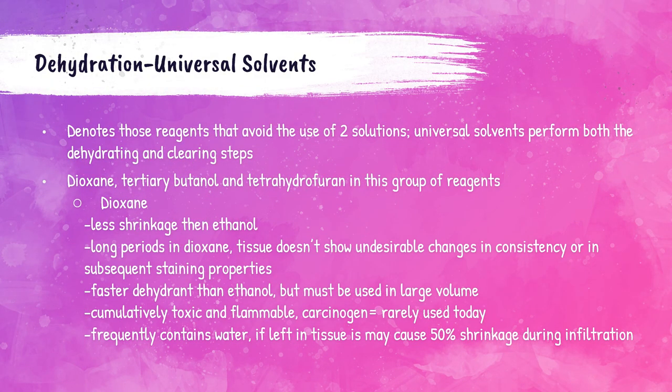Universal solvents perform both the dehydrating and clearing steps of processing. These are dioxane, tertiary butanol, and tetrahydrofuran. They are not really suitable for delicate tissue. Dioxane causes less shrinkage and is faster than ethanol as a dehydrant, but tissues must spend a long time in it and a large amount must be used. Dioxane is not frequently used because it is toxic, flammable, and a carcinogen; OSHA's eight-hour PEL is 100 parts per million.